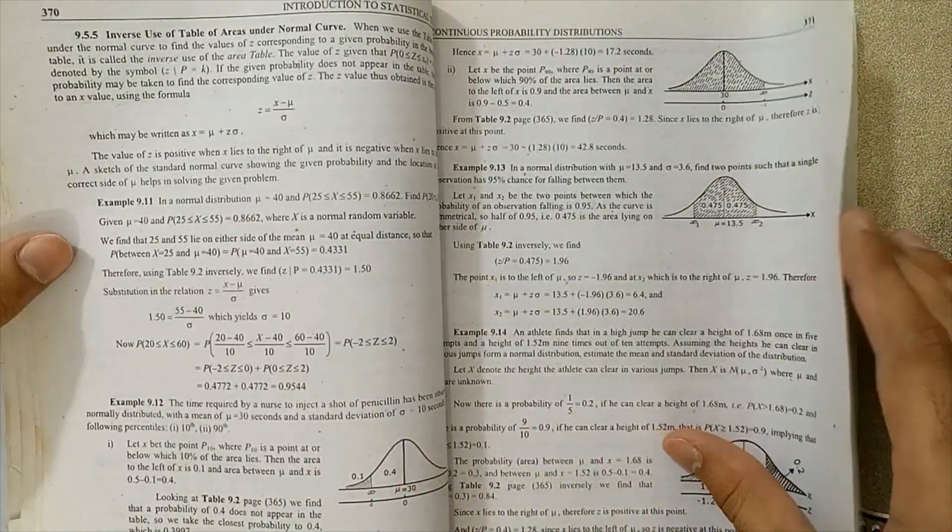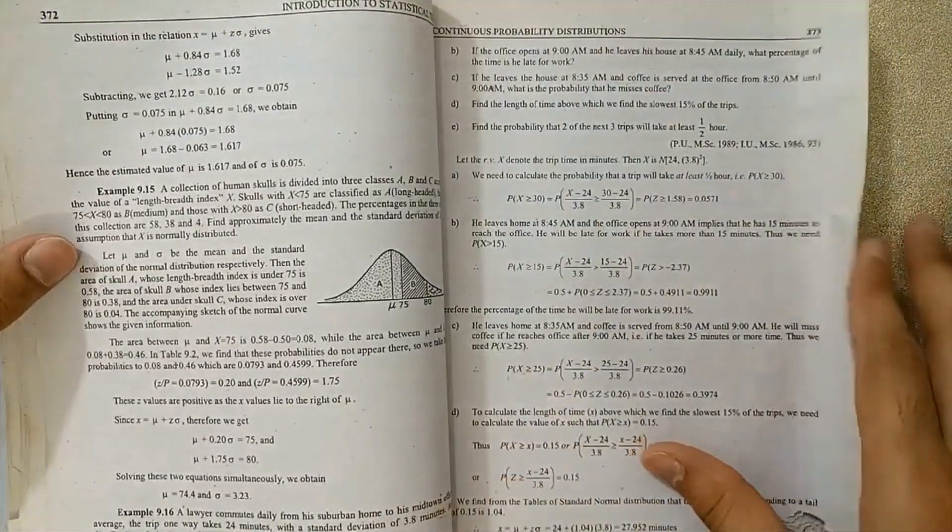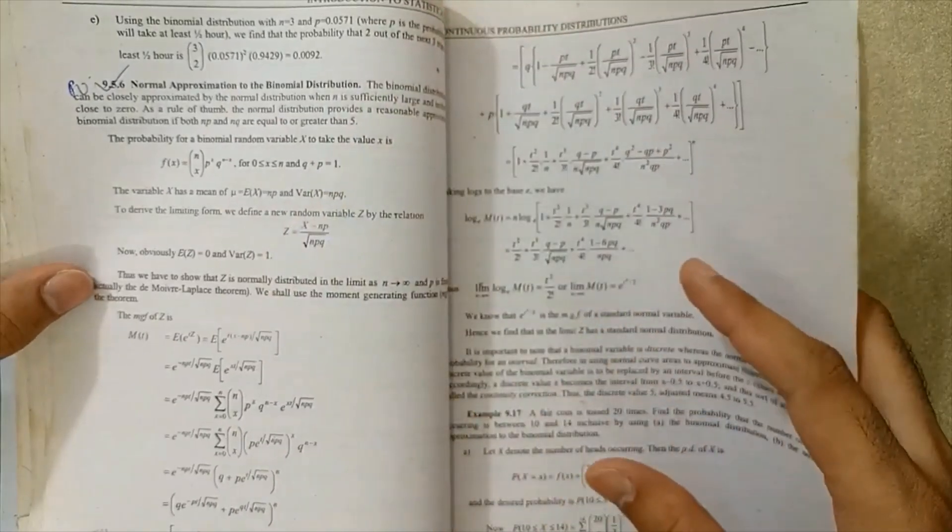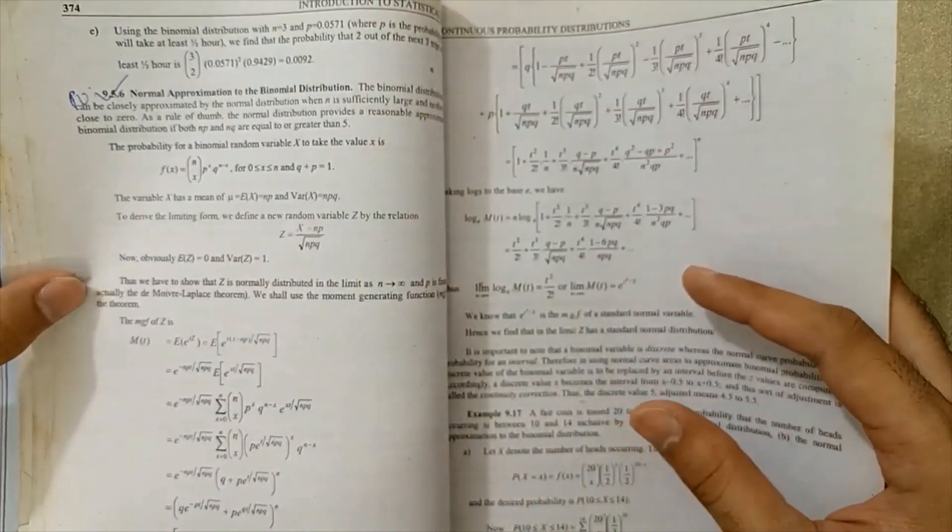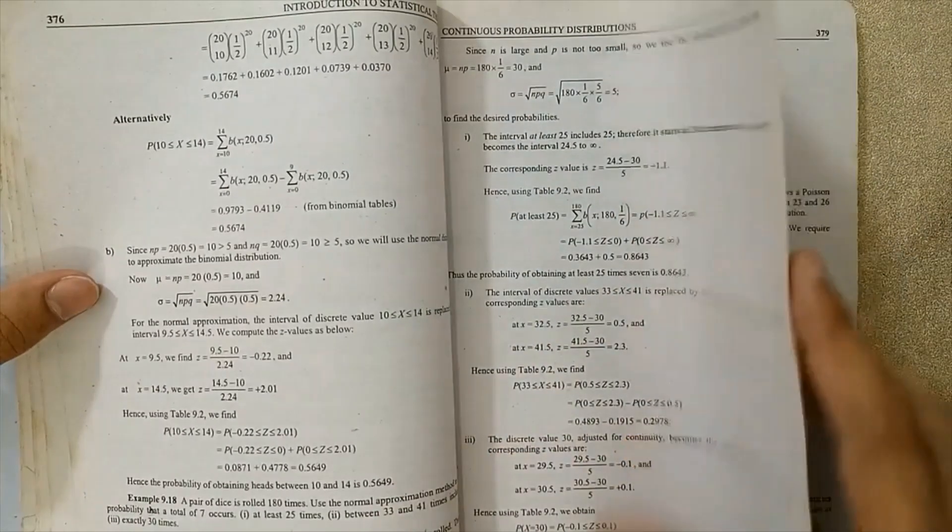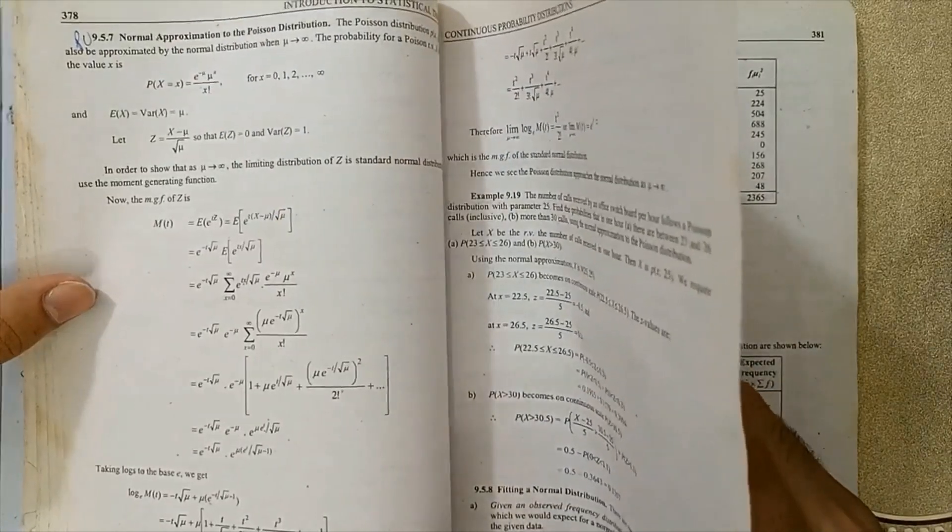What is the normal distribution is very important. How to find the normal distribution. At pages 350 and 374, normal distribution is very important.